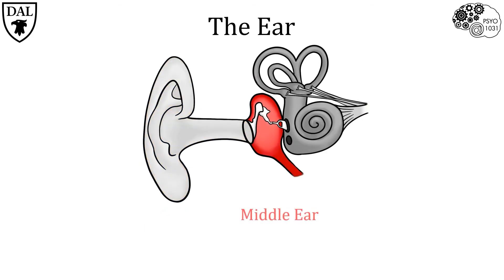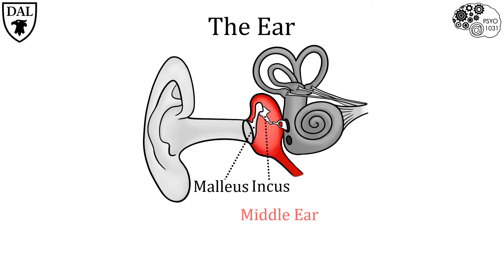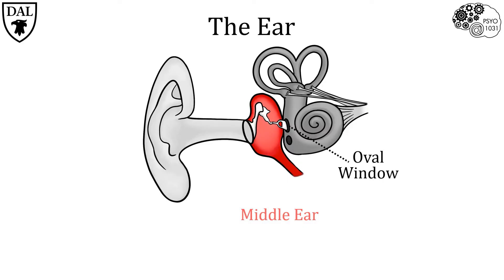The middle ear is located on the other side of the tympanic membrane. It is an air-filled chamber consisting of three distinct bones, also called ossicles, which are connected to each other in series: the malleus, also known as the hammer; the incus, also known as the anvil; and the stapes, also known as the stirrup. This chain of ossicles links the tympanic membrane and the oval window. When sound waves hit the tympanic membrane, they are amplified by the middle ear on their way to the oval window. Thus, the middle ear serves as a signal amplifier.